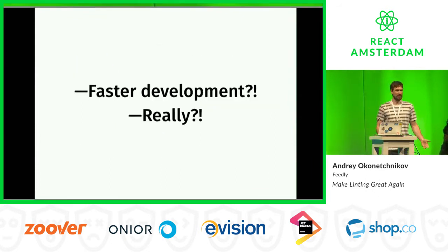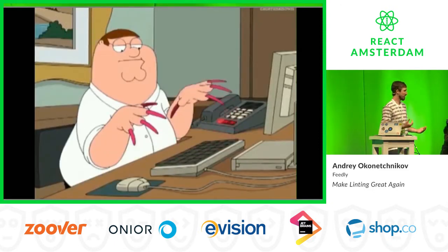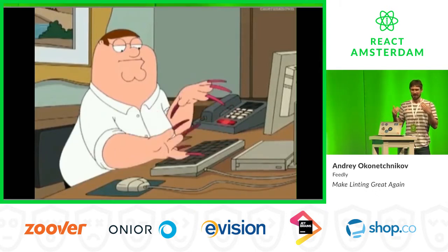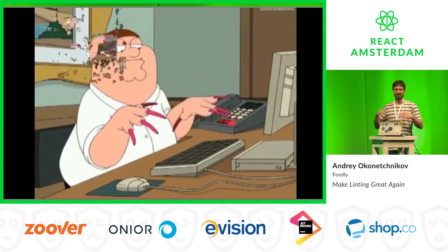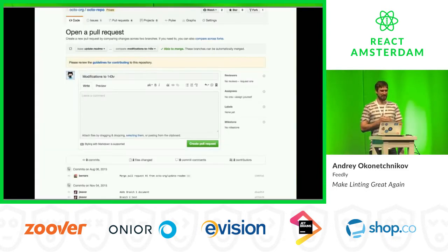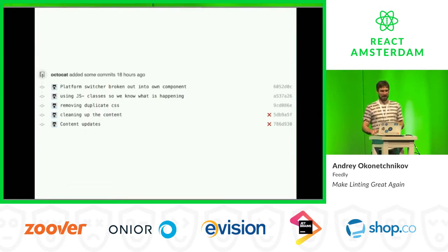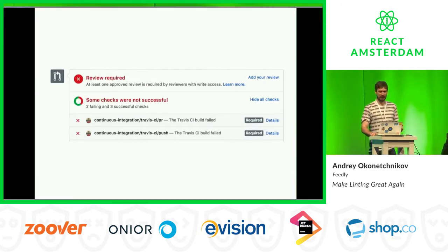But is it really faster? Does it really make us faster? Because let's take a look at our usual code writing process. We write our amazing, stylish code. And the next thing we do, we open a pull request and we push our code to the server, just to find out that the build is failing. Oh, I probably broke something.